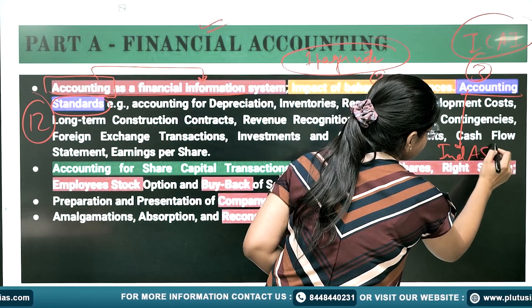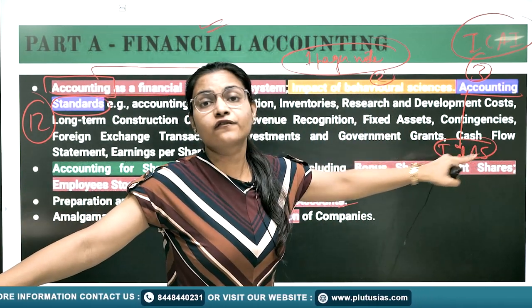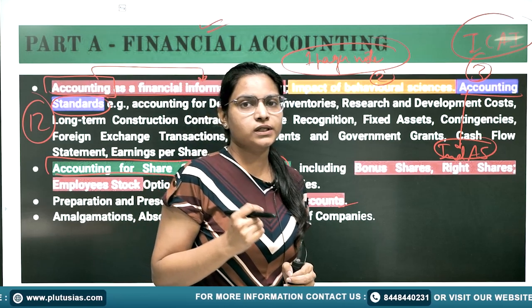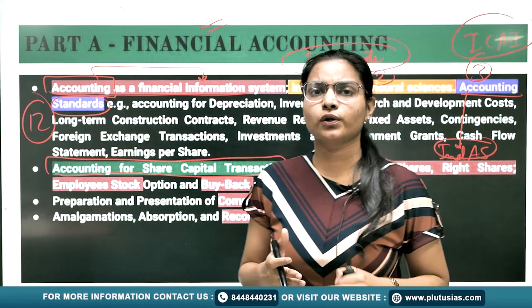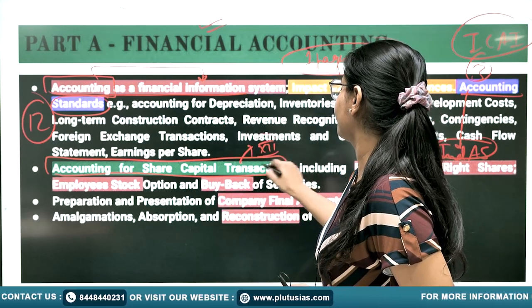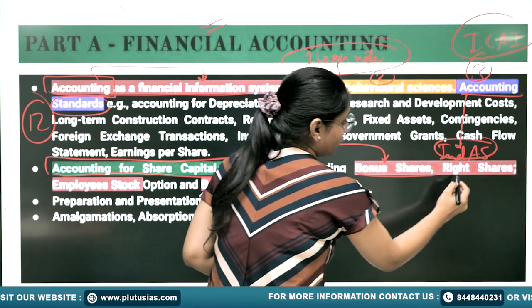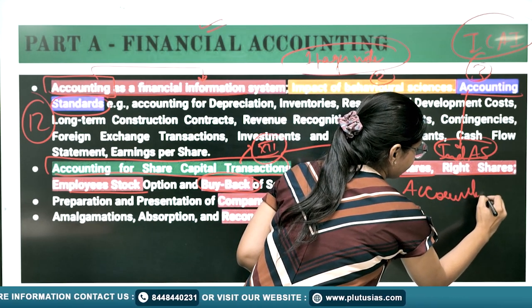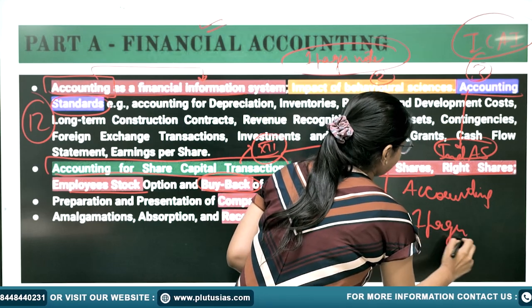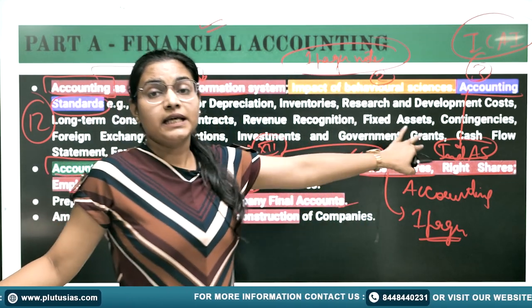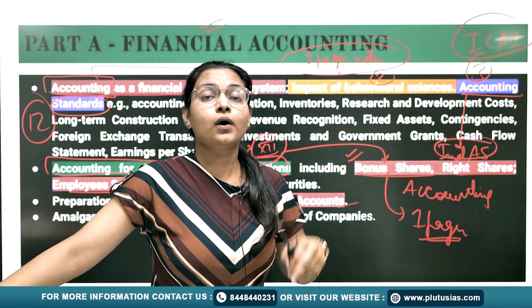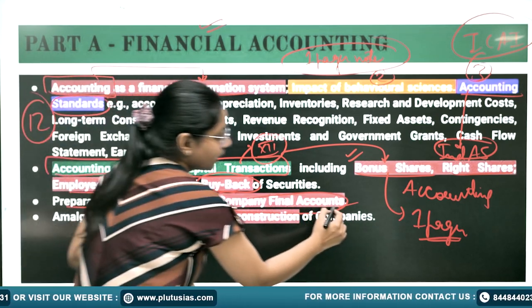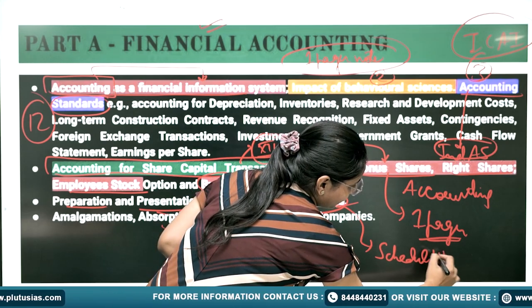You also need to prepare IND AS, which are basically derived from IFRS. The next topic is Accounting for Share Capital Transactions — if you are opting for Commerce and Accountancy you must have taken commerce in 11th/12th. Categories include bonus shares, right shares, ESOPs, and buyback. Focus on the accounting part and also prepare one-pager theory notes because they can ask about the significance or impact on the company, shareholder, or economy. Then prepare Company Final Accounts as per Schedule III of the Companies Act 2013.